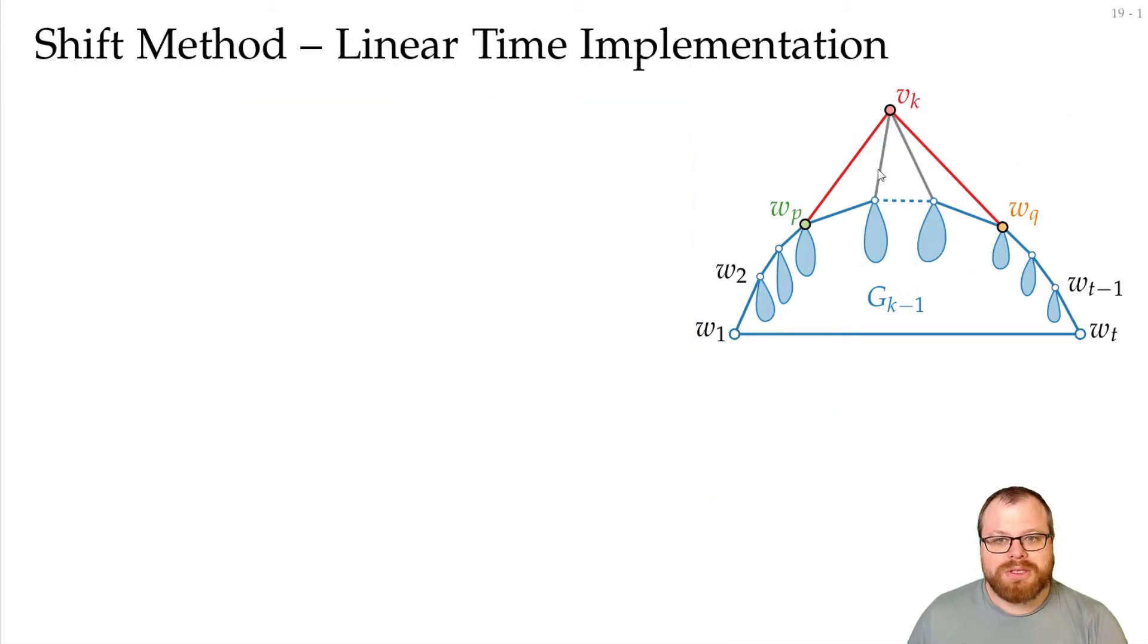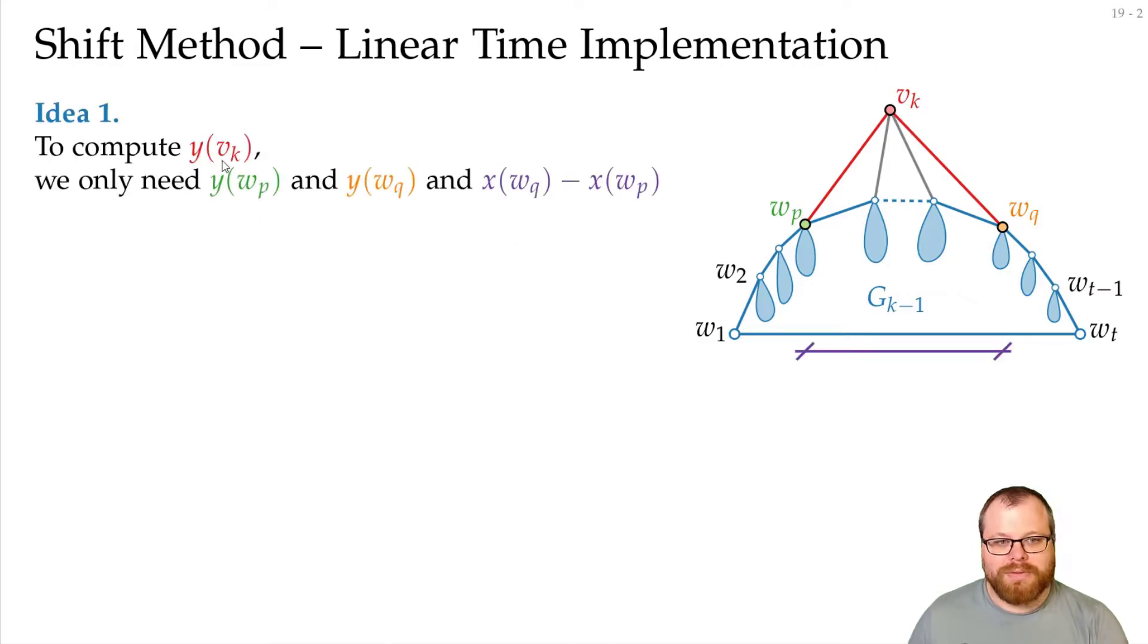So if we want to calculate the coordinates of V_k, for the y coordinate, it's enough if we know the y coordinate of W_p and W_q. Those are constants, they don't change at all during the algorithm, and the distance between these two. Then we can simply calculate the new coordinates by taking half the distance plus the sum of the y coordinates of those.